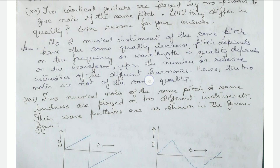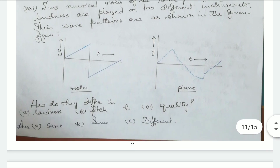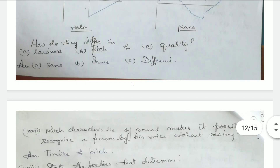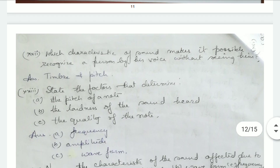Two musical notes of the same pitch and same loudness are played on two different instruments — the wave patterns are given. For violin it appears in one form, and for piano it is a slightly wavy form. How do they differ? For loudness, both are the same; for pitch, both are the same; they differ only in quality.